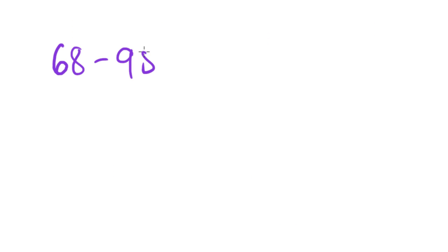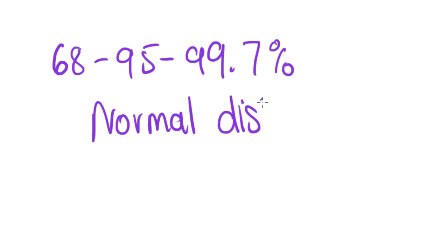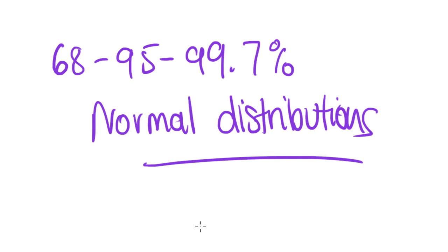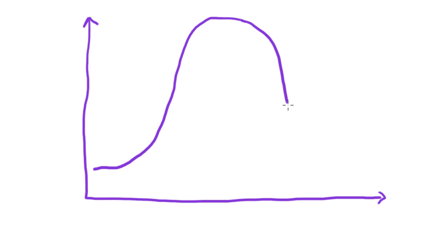This tutorial is going to talk about the 68, 95, 99.7 rule for normal distributions. So what does all that mean? Well, let's start with what is a normal distribution. A normal distribution is something that comes up in nature quite a lot. It's a graph, a distribution of data that follows a bell shape — like that. Looks like a bell.